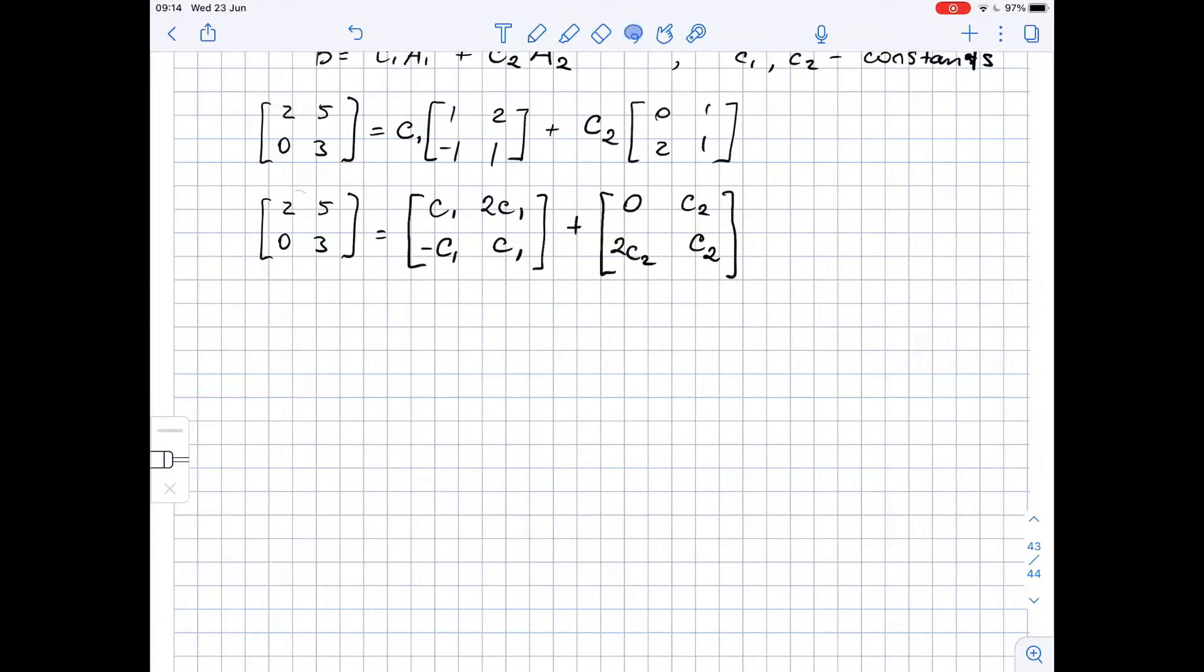Now let's do the addition. So we got that matrix B equals C1 plus 0, then 2C1 plus C2, negative C1 plus 2C2, and C1 plus C2.